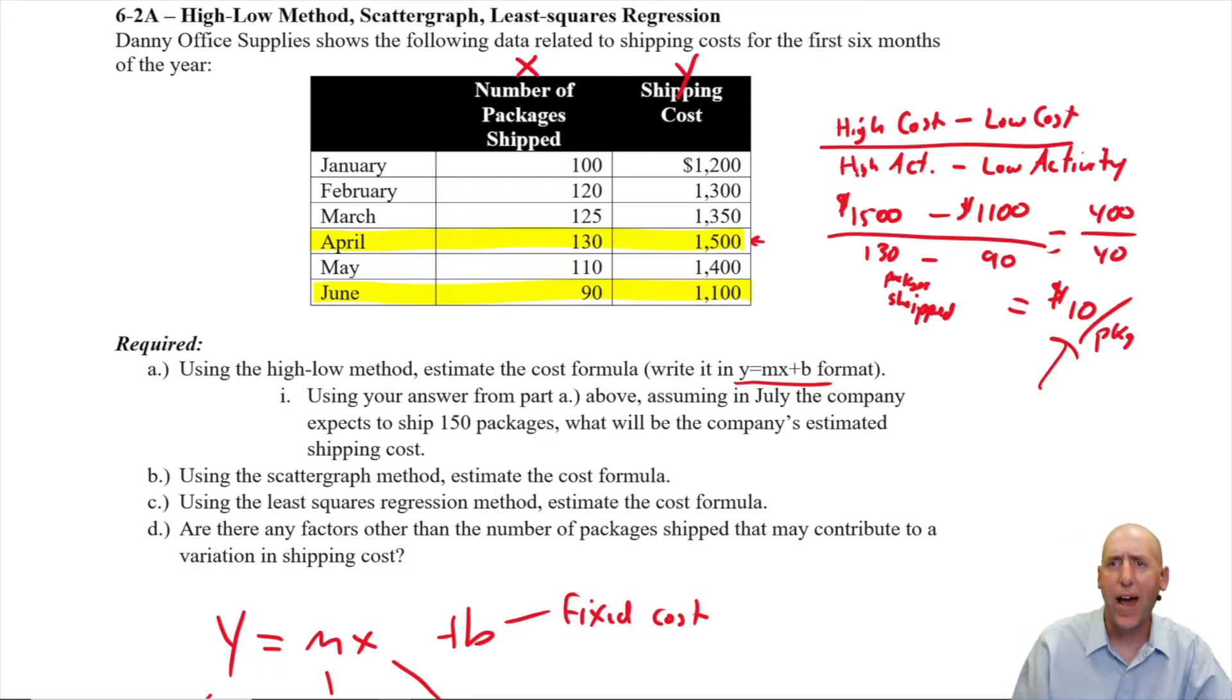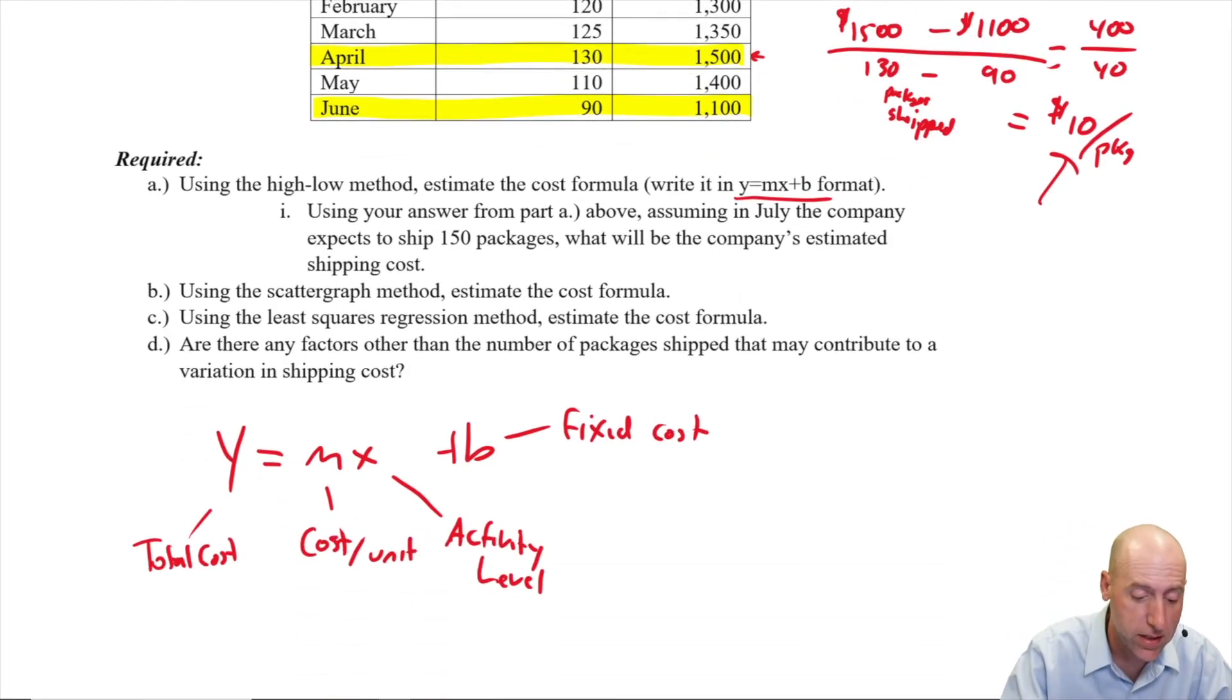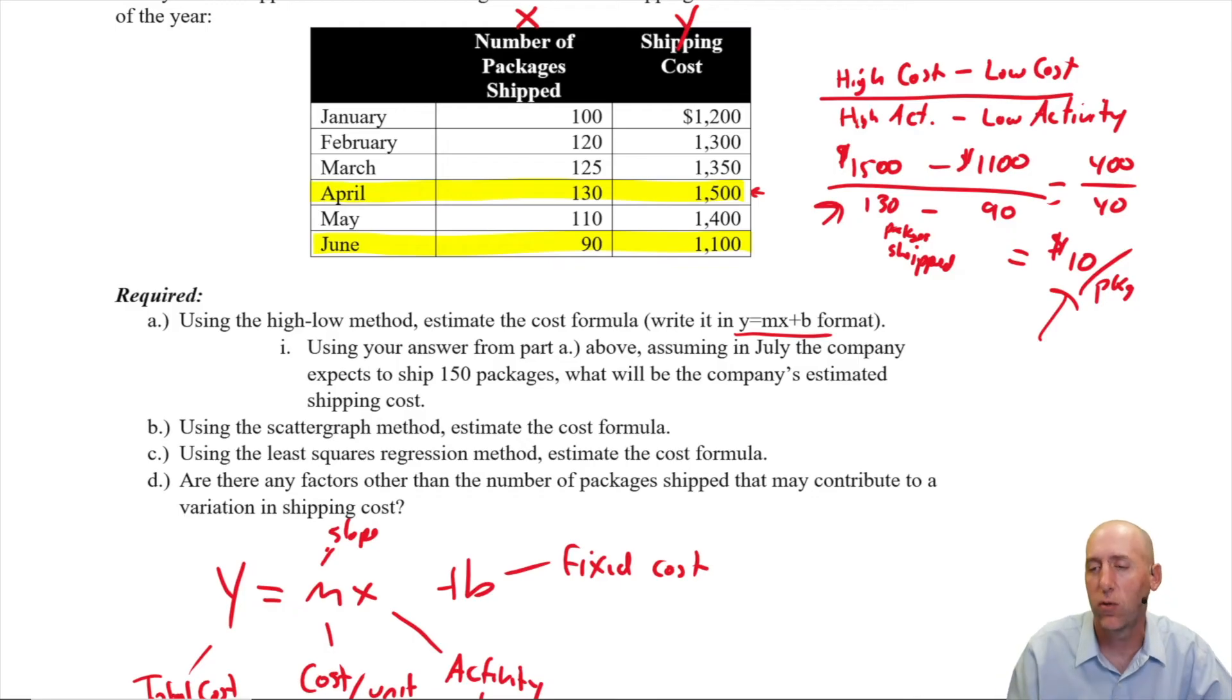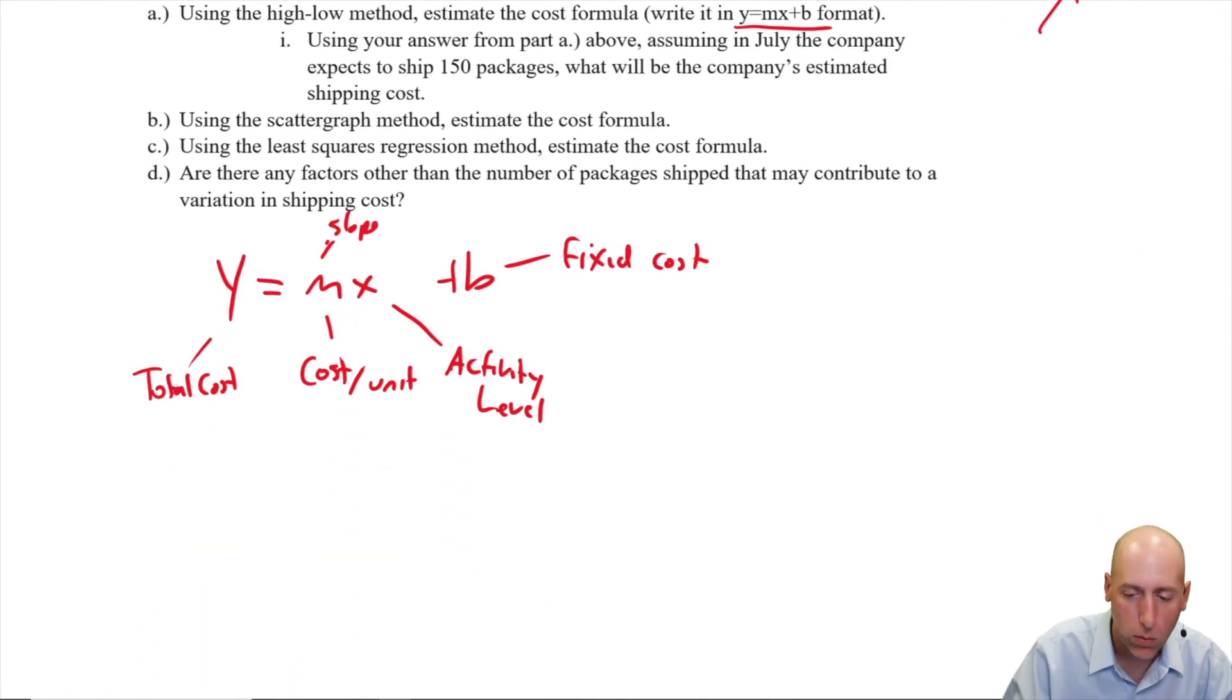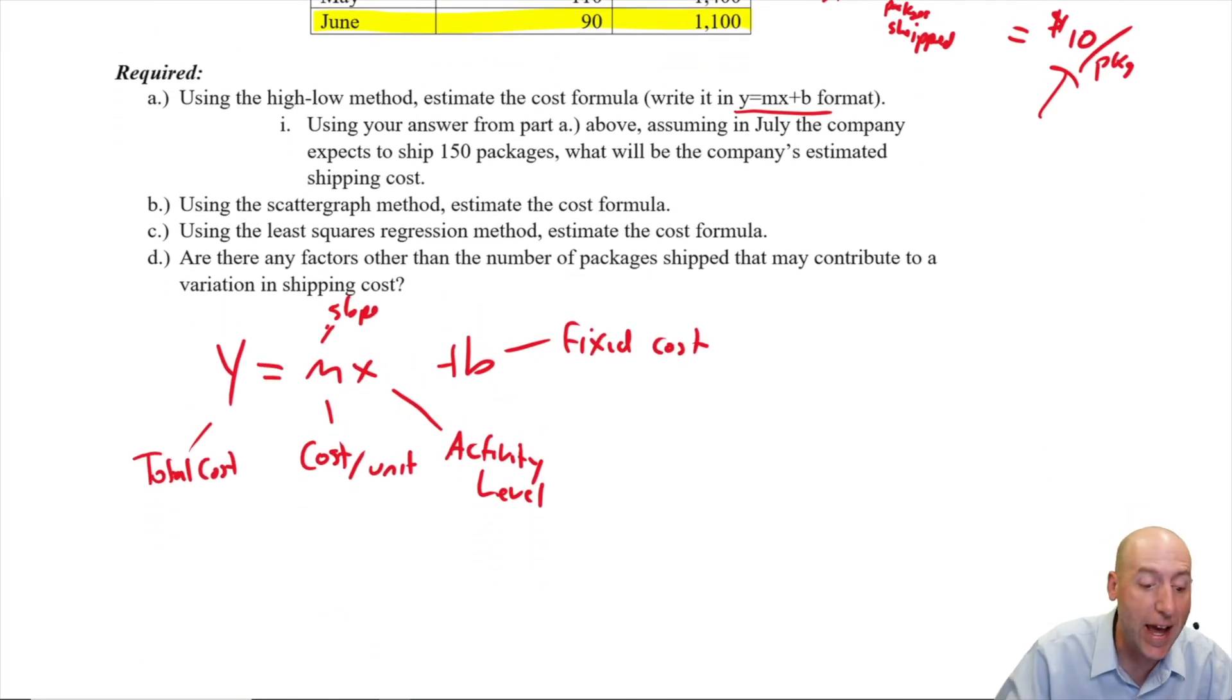So what have we computed here? We've computed $10 per package. This is my cost per unit. This is, if we're using the traditional line metrics, this is the slope. We've just done a rise over run calculation, if that's ringing any bells for you back in the old math days. So we've computed our slope as 10. So we know y equals 10x plus b.